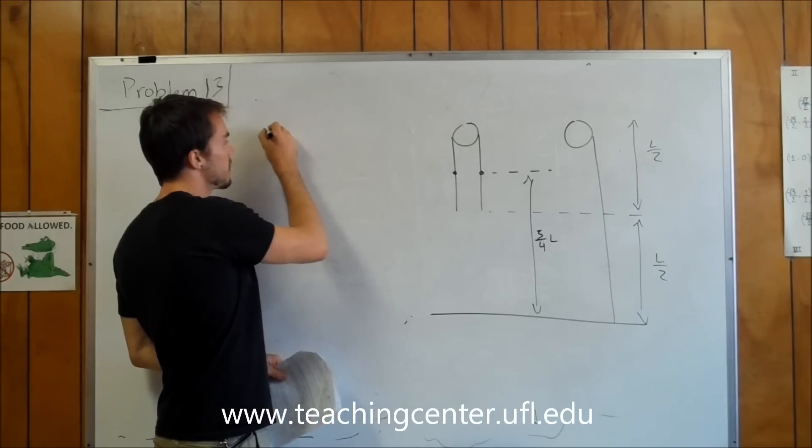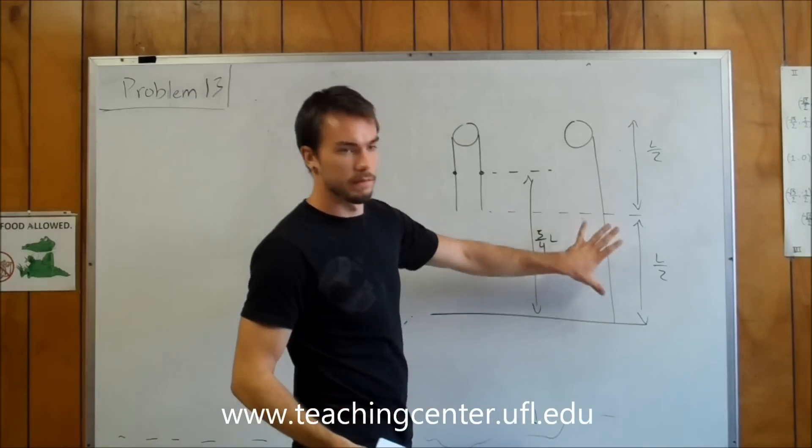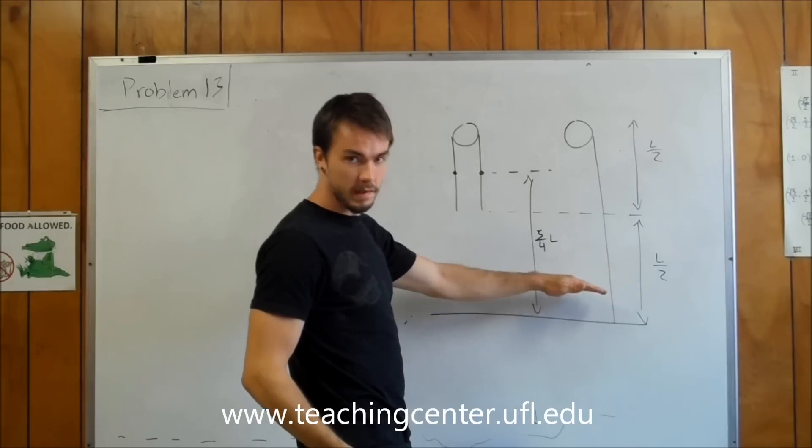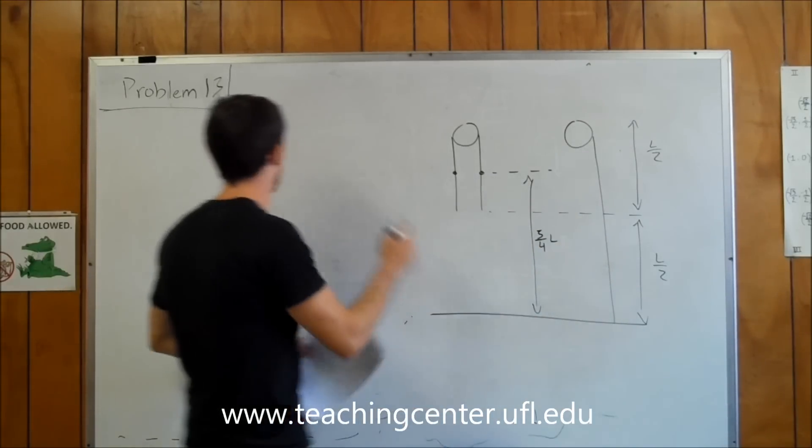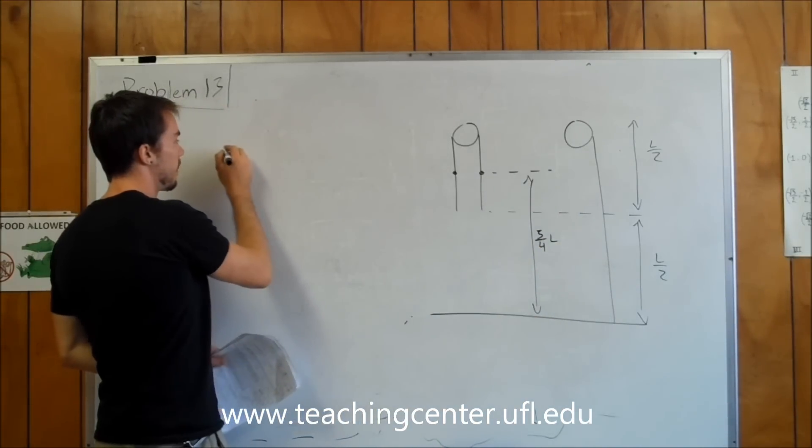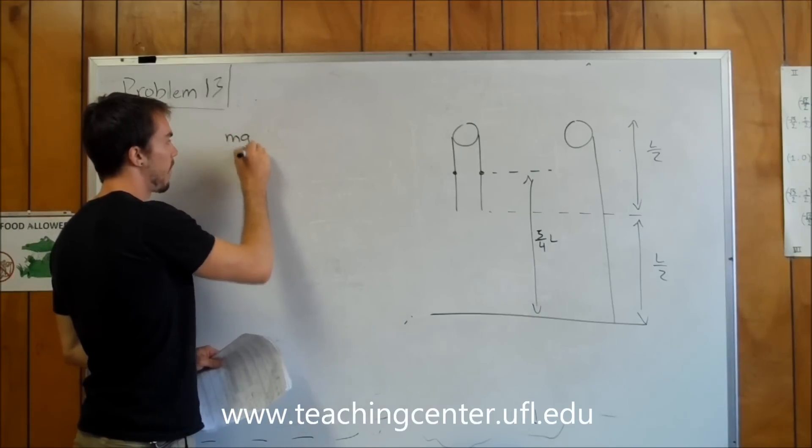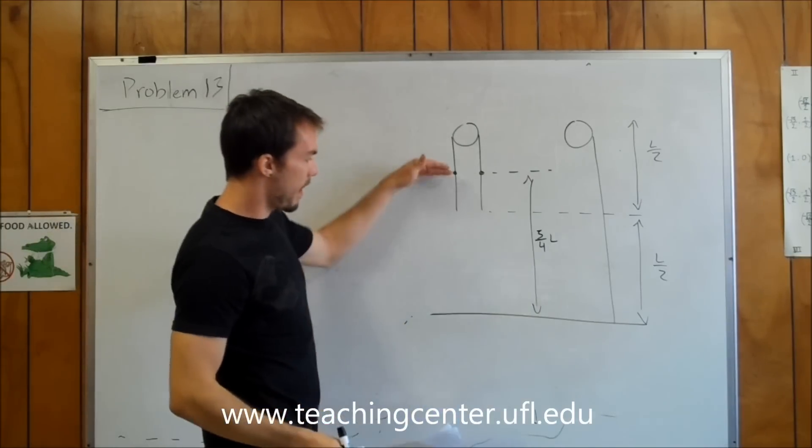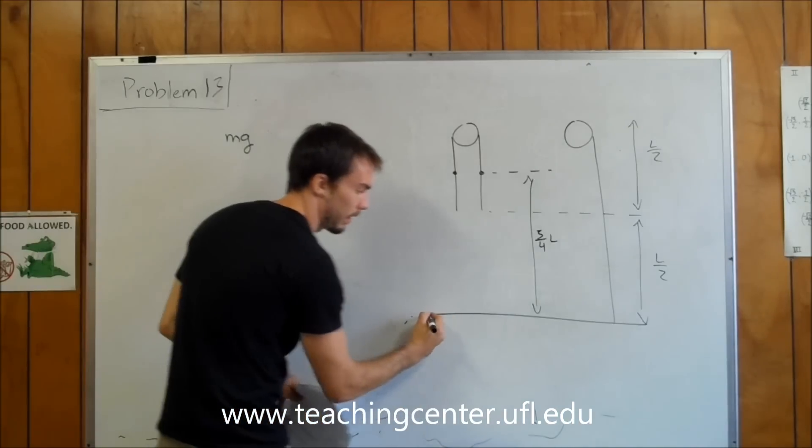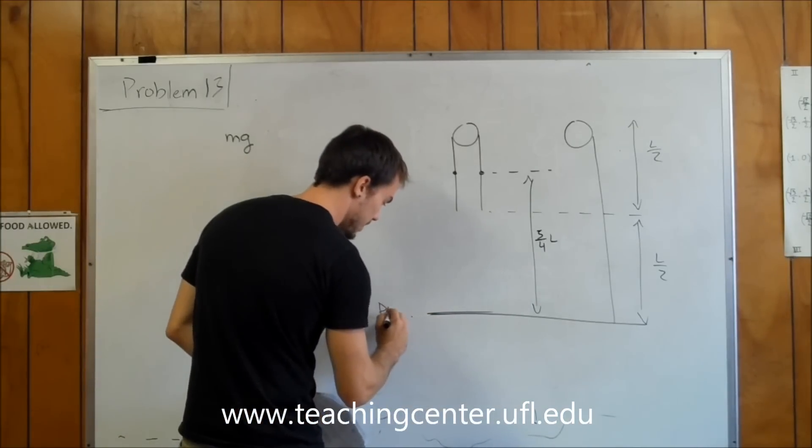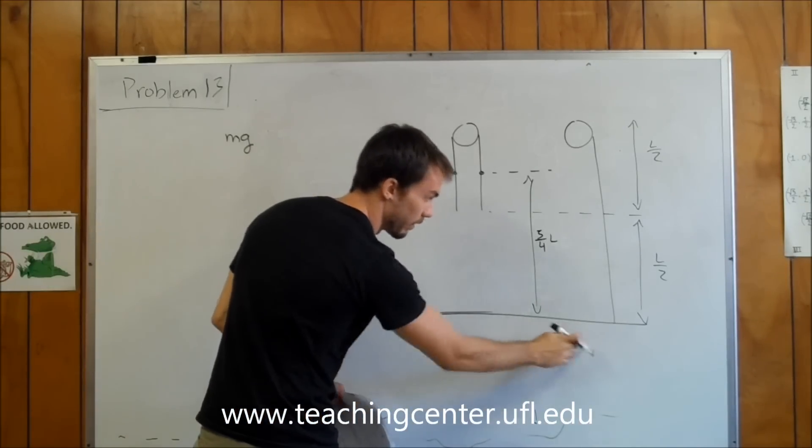So we can say that initially we have just potential energy, and then finally we're going to have both potential and kinetic. So on the initial side of the equation we say: mass of the rope times gravity times the height of the center of mass above our datum, which I'm going to pick as the bottom line, saying there's no potential energy right at ground level.